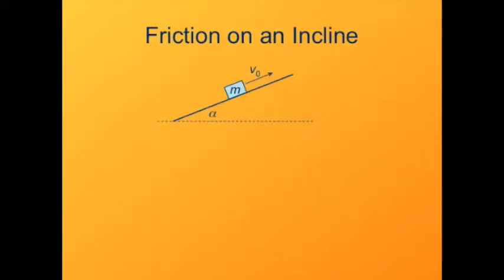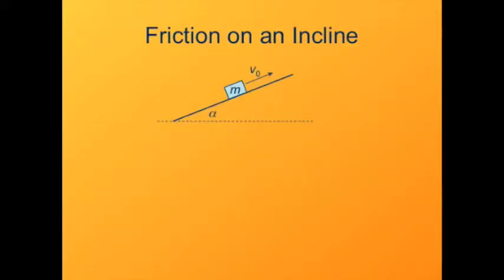Let's make things a little more complicated and look at the force of friction on an incline. What I've shown here is a block of mass M, not at rest, and sliding uphill on an incline at angle alpha. It'll be useful to use inclined coordinates, with plus x being up the ramp and plus y being normal to the ramp, away from the ramp.